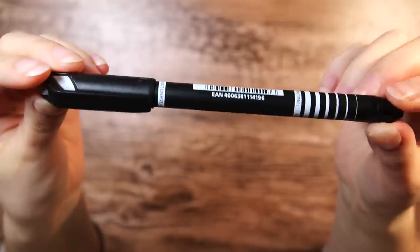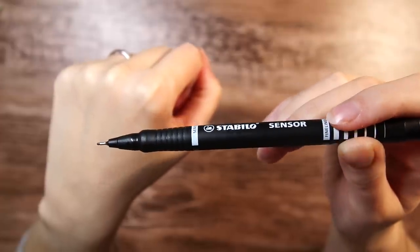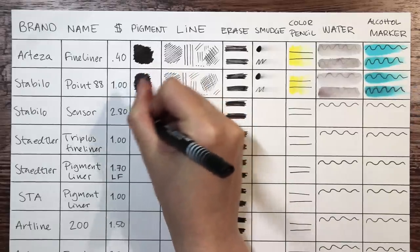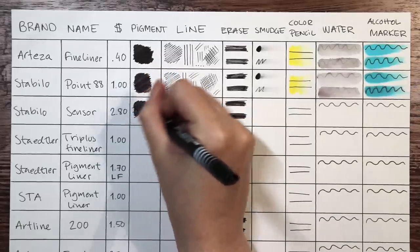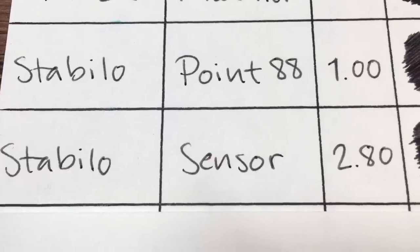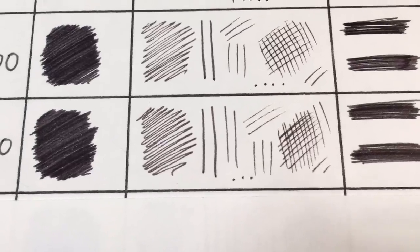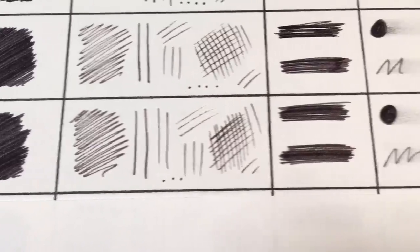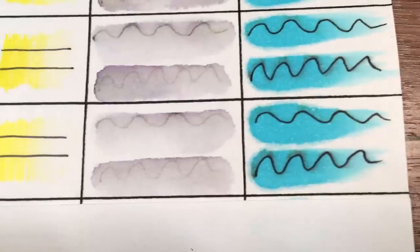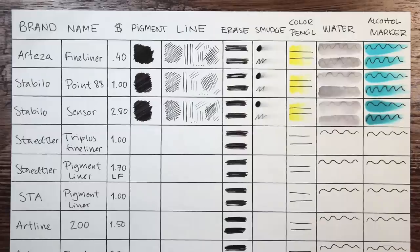Then we have the Stabilo sensor that is about $2.80 which means it is almost three times as expensive as the previous pen from the same brand. The interesting part is that there is little to no difference when doing this test, the results are just the same. It does feel a little smoother to draw with though but my guess is that it is the same ink just different packaging. The sensor pen looks more professional but it performs just the same as its cheaper counterpart.